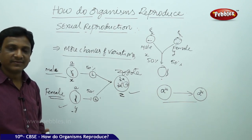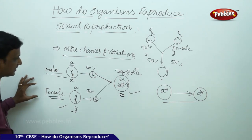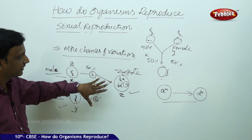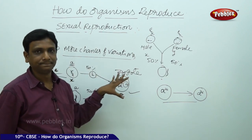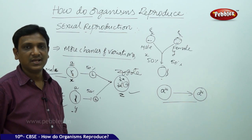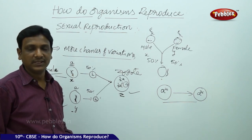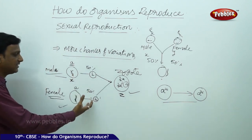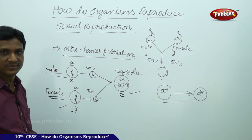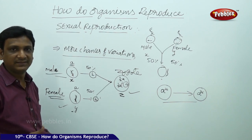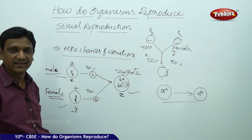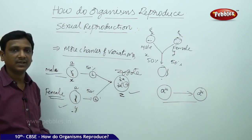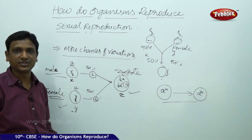Whatever variations are there in the parent organisms, these variations accumulate and the new DNA is formed in the zygote in sexual reproduction. There is more scope for these variations. In sexual reproduction, the sex cells or germ cells will have half the number of chromosomes. When two sex cells combine, they form a zygote with the full number of chromosomes of that organism. This is how sexual reproduction is carried out.